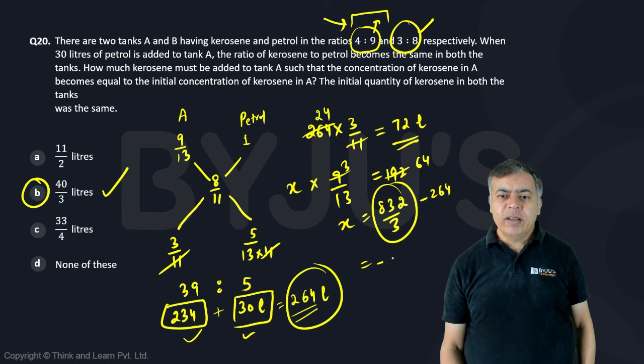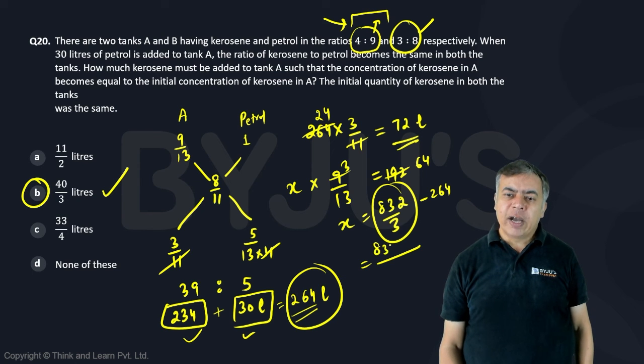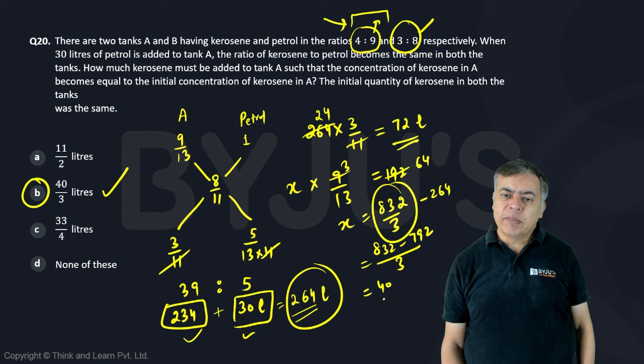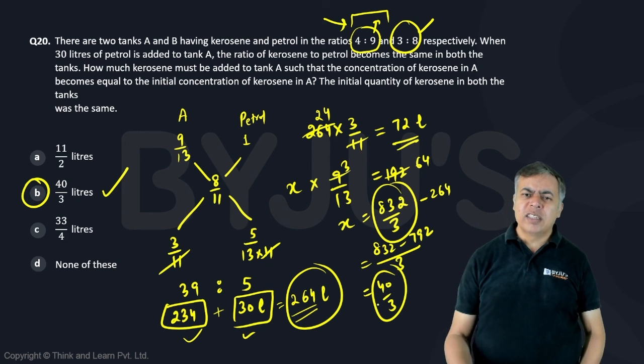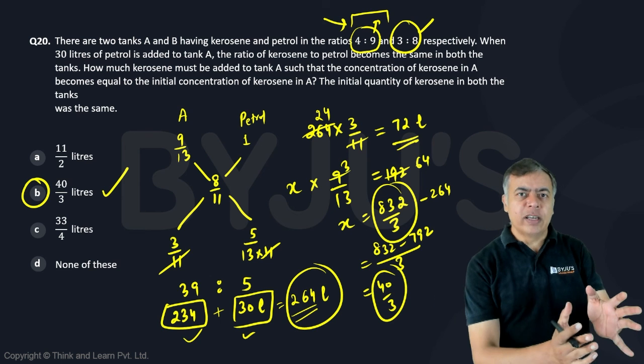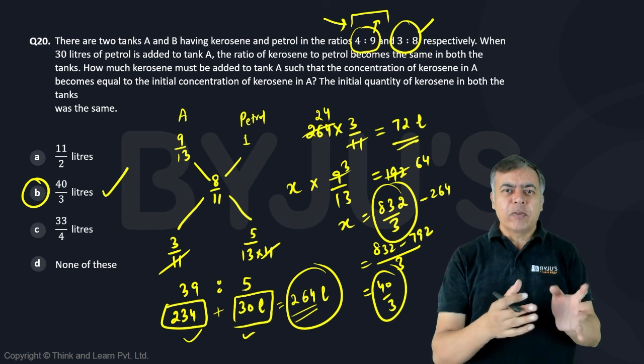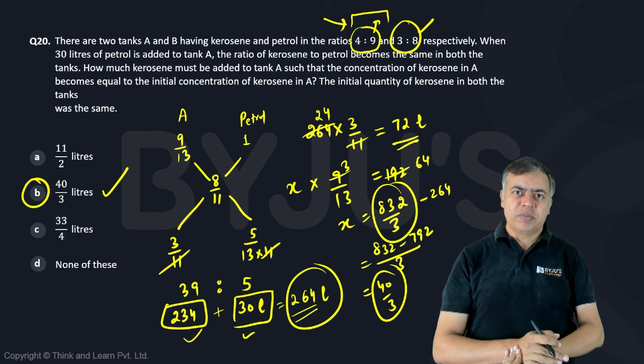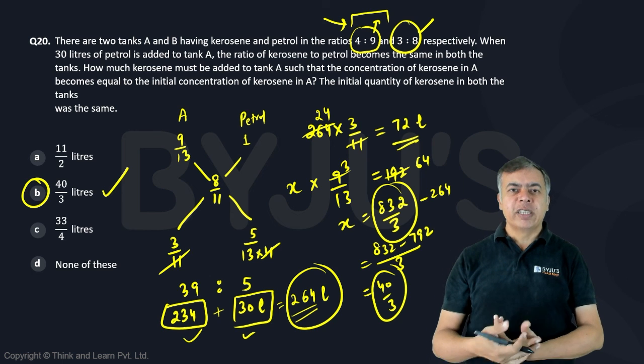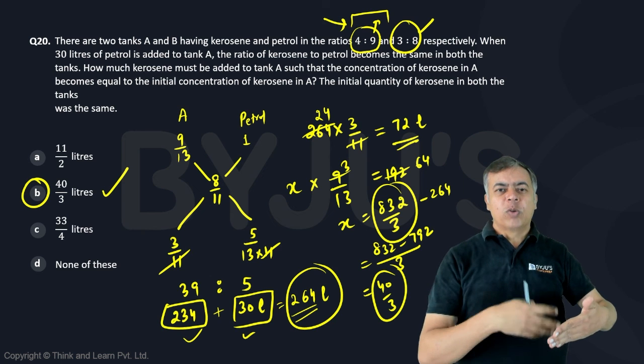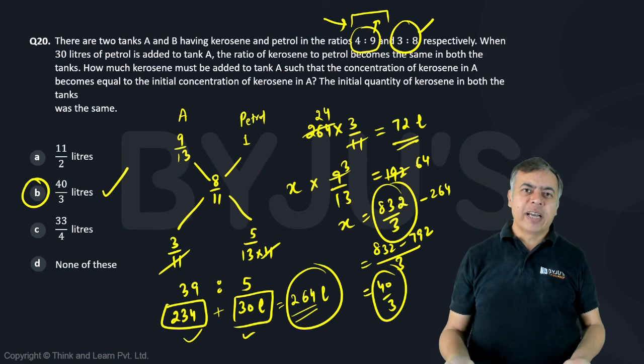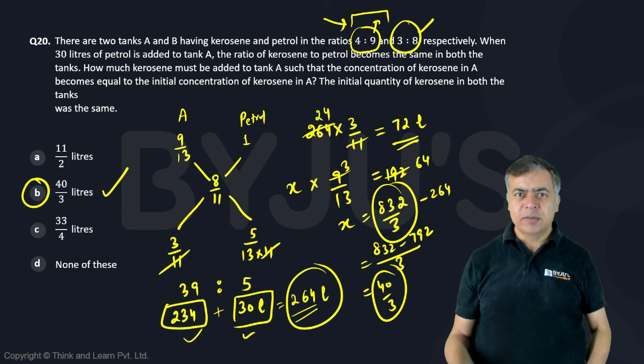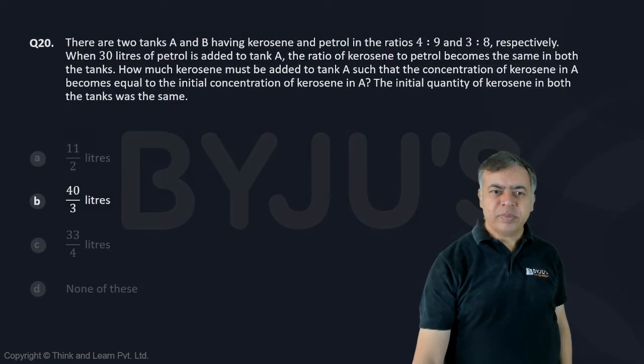If the new total is this and the old total was 264, how much I need to add? So 832 minus 264 into 3, that is 792 by 3, it is 40 by 3. So this is another method you can do. Whatever is petrol there, kerosene you are going to add, but whatever is petrol there that must become 9 by 13 of the total. The new total becomes 832 by 3 and the old total you know. So whatever you will be adding, you will be adding only kerosene, that will be 40 by 3.